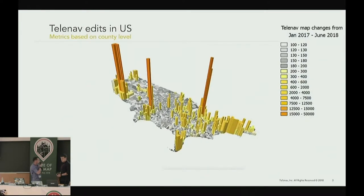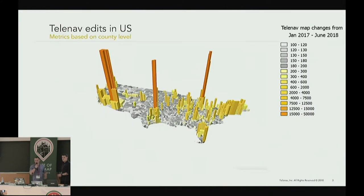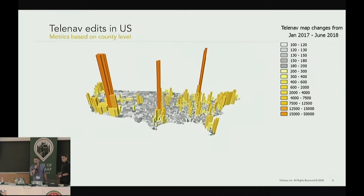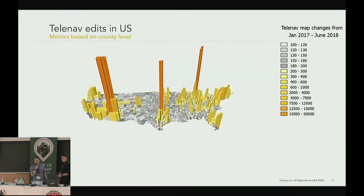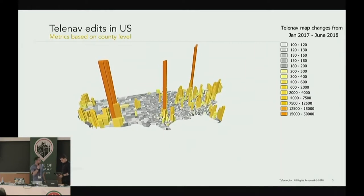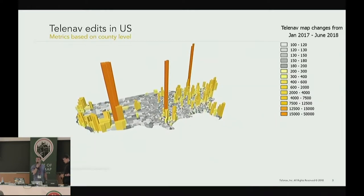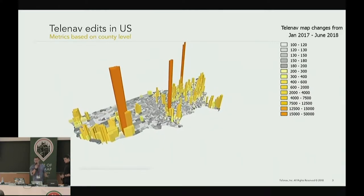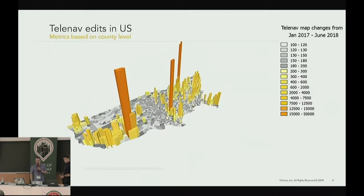Here you can see the US edits from our team. The edits are represented on county level and are based on the most important metro areas, such as Phoenix, Dallas, and Detroit. Most of our edits are based on road geometry, road name, turn restrictions, and other way relations — the most important elements for navigation systems.